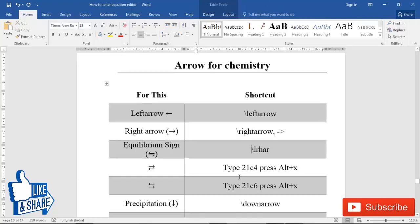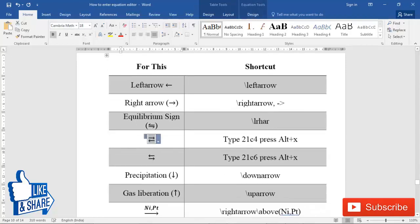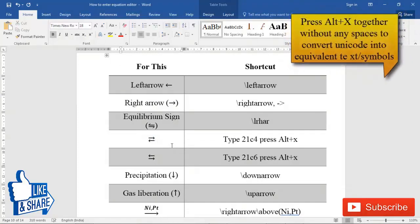For equilibrium sign, type 21c4 and then press alt+x. This is not available as a shortcut, you have to use unicode and for this you don't have to go inside equation editor.